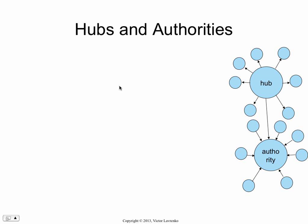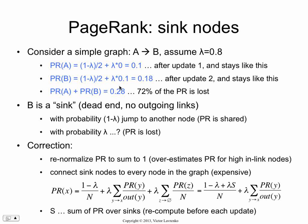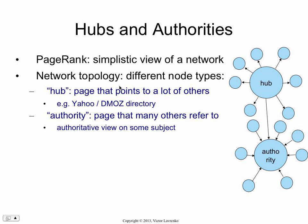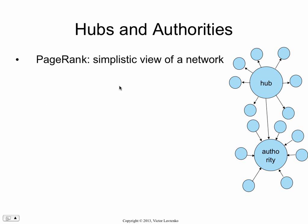OK, that's all for PageRank. Any questions at this point? All right, let's move on. So let's talk hubs and authorities. It's an algorithm, not nearly as popular as PageRank, but arguably it gives you a richer view of what's happening in your graph. PageRank is relatively simplistic — it basically counts one thing for each node: a notion of popularity. How likely am I going to end up at this node at a random moment in time?